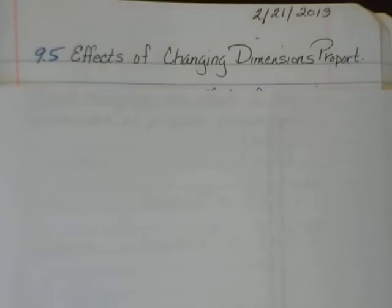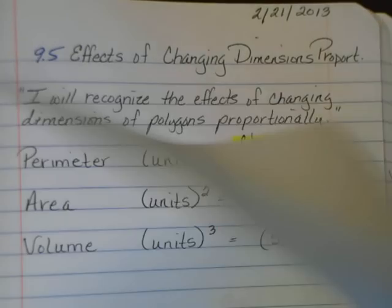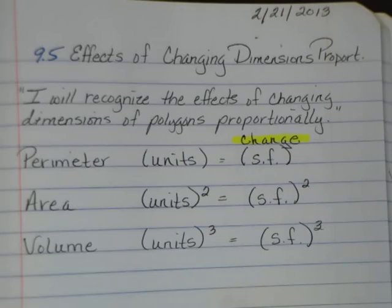Hey everybody, it's Miss Davis. We're going to do Chapter 9, Section 5 together tonight, talking about the effects of changing the dimensions proportionally on our polygons. First, make sure you have your notebook and the two pieces of paper that you picked up in class today - a full sheet and a half sheet.